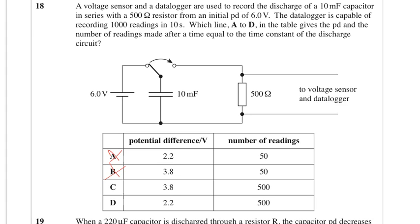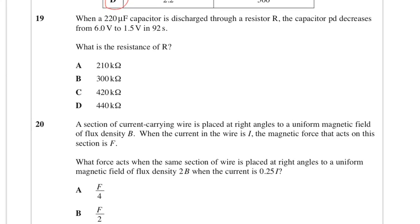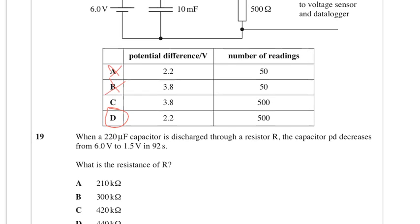What's the potential difference? If we do the time constant, T over the time constant will be 1, so e to the minus 1 times by 6.0 gives you 2.2, just using your discharge equation there. So we get answer D. Just to explain what I was using, I was using this equation here, and T over T equals 1 when your time is equal to the time constant.